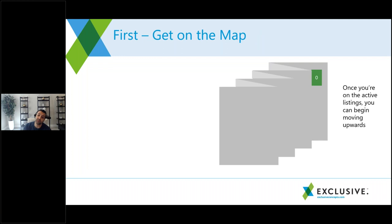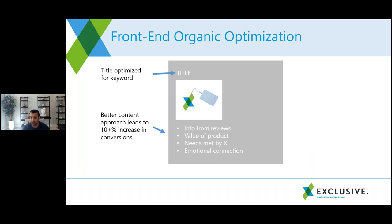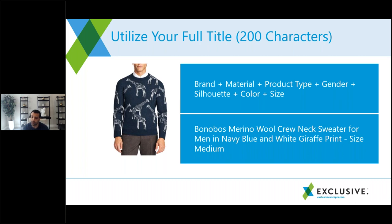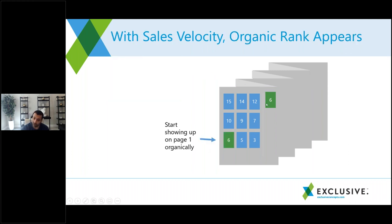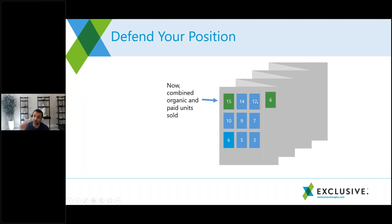The process is simple: first, put that keyword in your title, bullets, and tags to get on the map. If you're not on page one, you're getting no sales, so then advertise for that keyword. As you make sales and the A9 algorithm resorts by sales velocity, you'll climb — six sales here, six sales from the ad, then twelve, then fifteen, and you've got your top spot. That's how you build momentum.